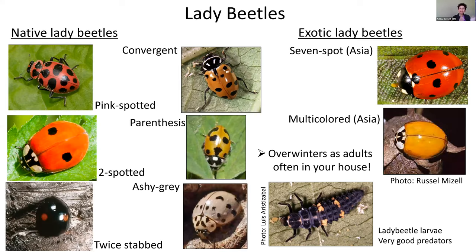We have some exotic lady beetles introduced through classical biological control, as well as many native lady beetles — most often classic black and red, orange and black, or pink, though some are black and ashy gray. The immature stage is typically black and orange and shown in the bottom right of the slide, so be sure not to accidentally crush it thinking it's a pest — that's actually an immature lady beetle.